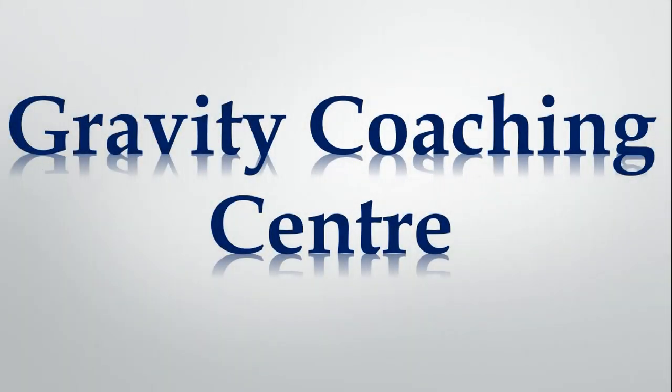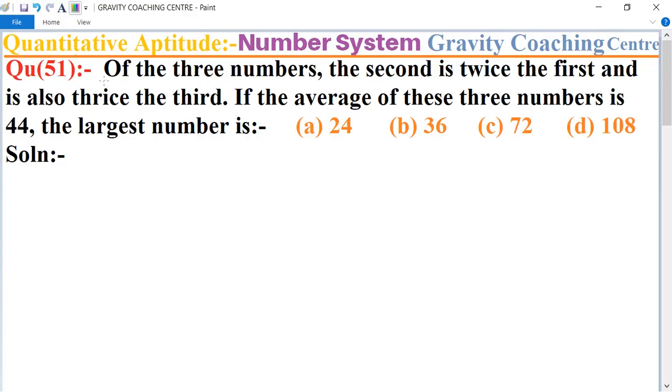Welcome to our channel Gravity Coaching Centre. Quantitative Aptitude, chapter Number System, question number 51. Of the three numbers, the second is twice the first and is also thrice the third. If the average of these three numbers is 44, the largest number is which one? In this question, first we let the...